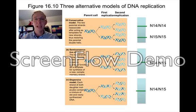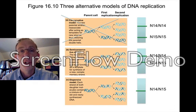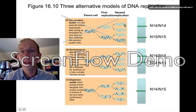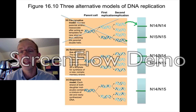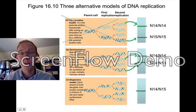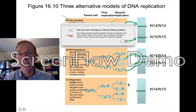Predict what you would expect to see in the test tube after the second replication. For the conservative model, we would expect two bands: one containing N14/N14 molecules and another containing the original N15/N15 pairing. In the semi-conservative model, we would predict two bands: one representing N14/N14 molecules and another containing N14/N15 hybrid molecules. In the dispersive model, we would predict just one band — containing N14 and N15 dispersed equally throughout.